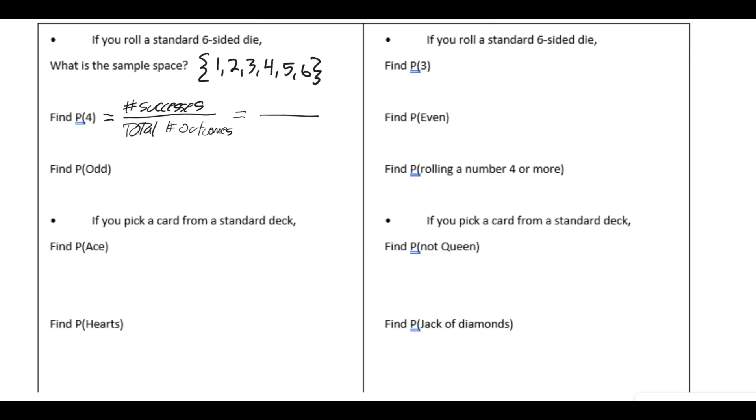So there are six events in the sample space. That's going to be the denominator of the probability. The numerator, how many ways can you be successful? In this case, we're just trying to roll a four. There's only one way to be successful. So the probability we're looking for is one-sixth. If you went to a calculator and approximated this, you would no longer have the exact answer because this decimal would go on forever, repeating. So one-sixth is the best answer.